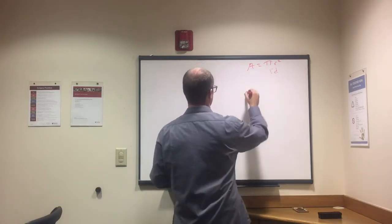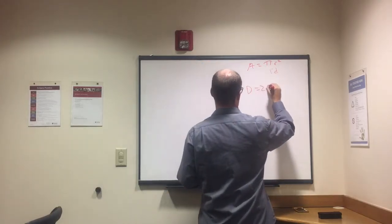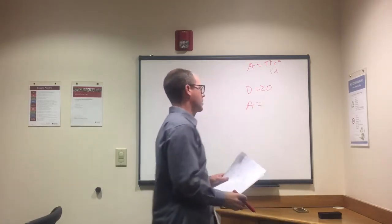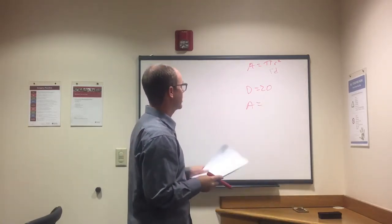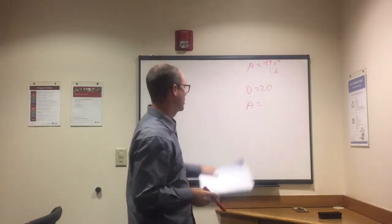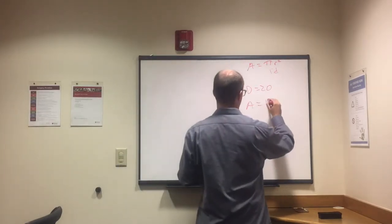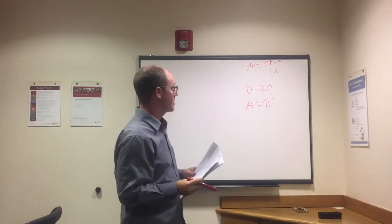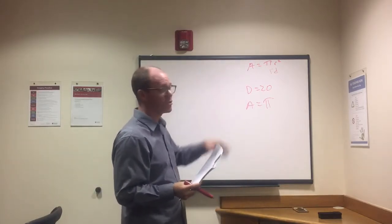We know that area equals pi r squared. Now if the diameter is 20, radius is what? Radius is half as big as diameter.